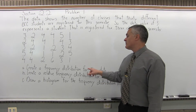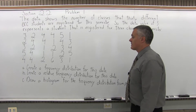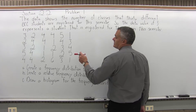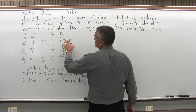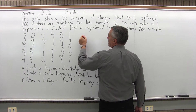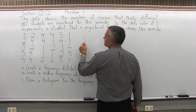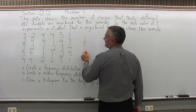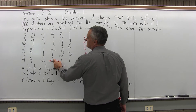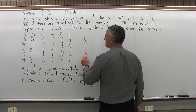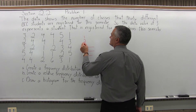Part A says create a frequency distribution for this data. The number of possible answers we have: nobody said 0 classes, so it starts with 1. There's 2, 3, 4, 5, and one student even took 6 classes in a semester, and that's as high as it goes. So that'll be the first column of our frequency distribution.